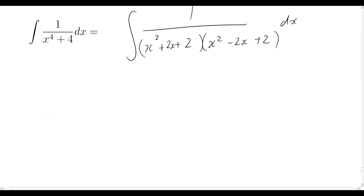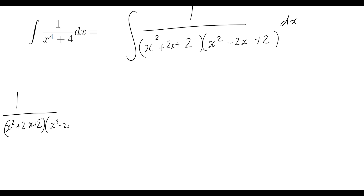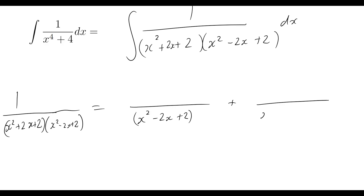The way partial fraction decomposition works is we first write out what we have: 1 over (x squared plus 2x plus 2)(x squared minus 2x plus 2). We then write this as the sum of two fractions with those separate factors as denominators. For the numerators, we set constants a, b, c, and d, giving us (ax + b) over the first factor and (cx + d) over the second.